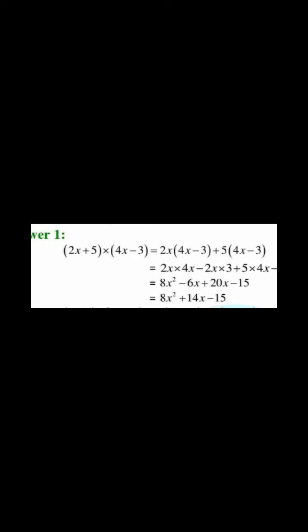So sign of 2x is plus and sign of 3 is minus. Plus into minus, we have already read in previous classes, plus into minus is minus. So 2x multiply 3. And in the same way, 5 into 4x, then plus into minus, minus 5 into 3.